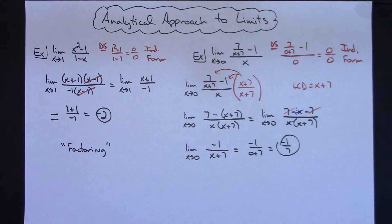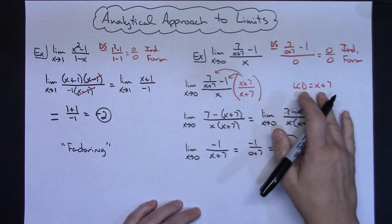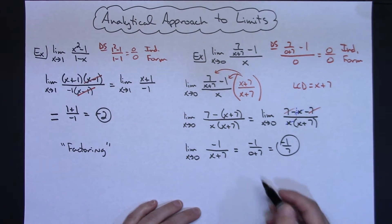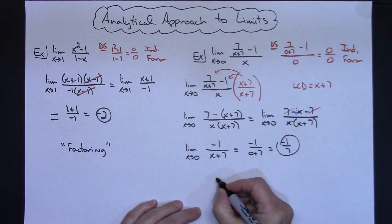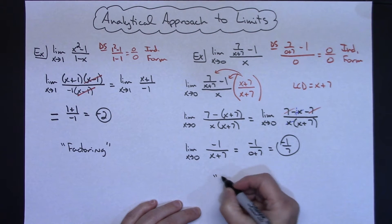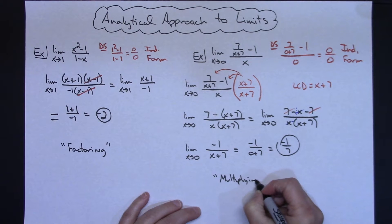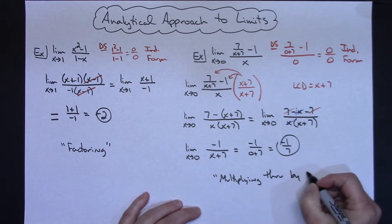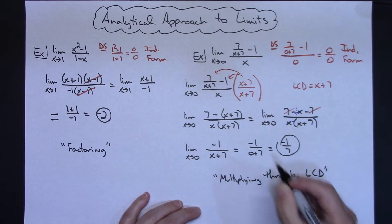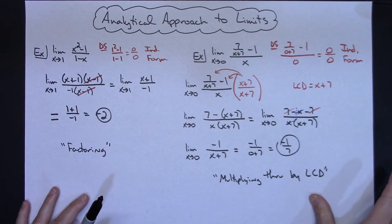So this example focused on multiplying through by the least common denominator to eliminate the complex fraction — and you do need to recognize that you have a complex fraction for this algebraic technique to work.